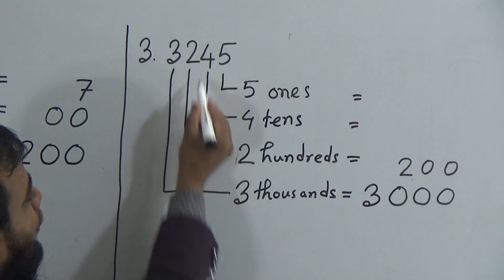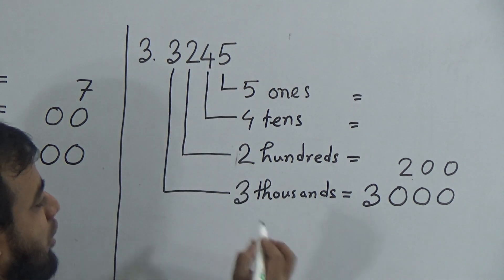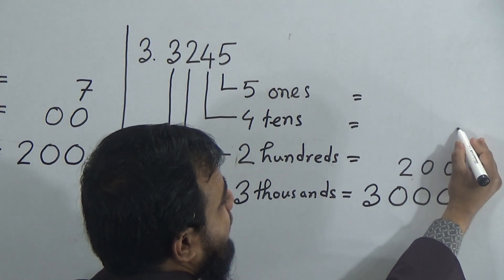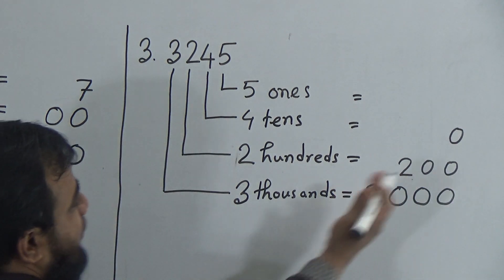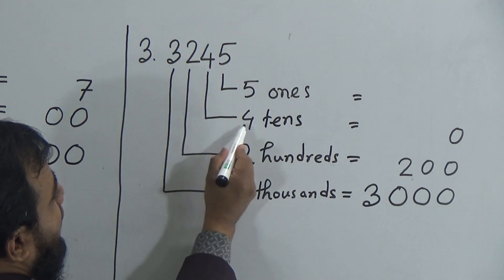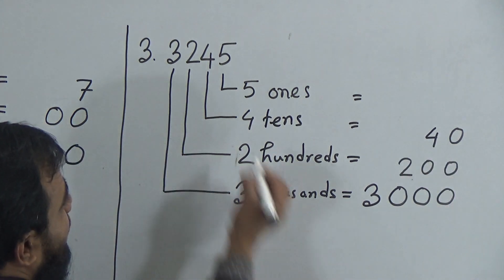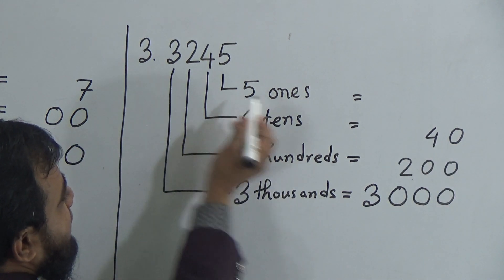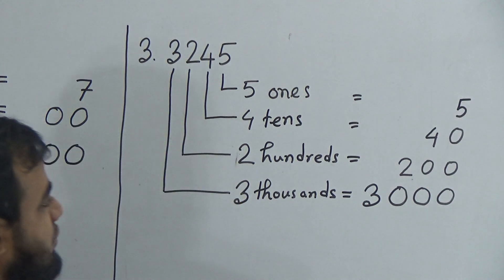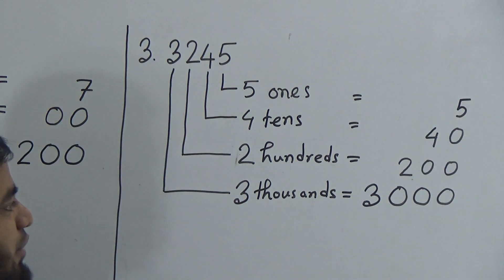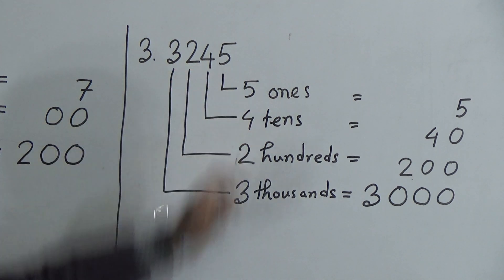After that we have 4 tens. After 4, we have 1 digit, so we write 1 zero on the top of the 200. Before that zero we write the number 4. Similarly, 5 ones equals 5, so we write 5 on the right. This is the place value of 3245.